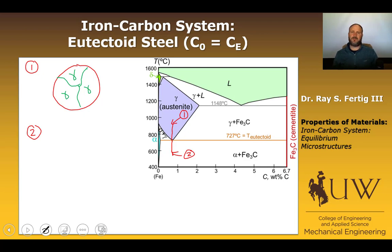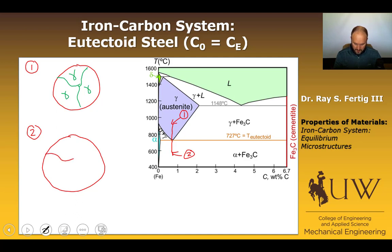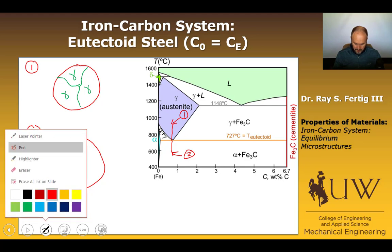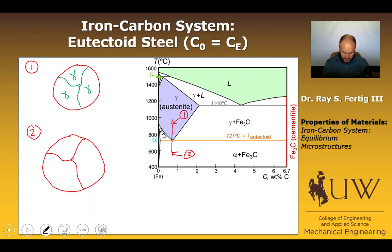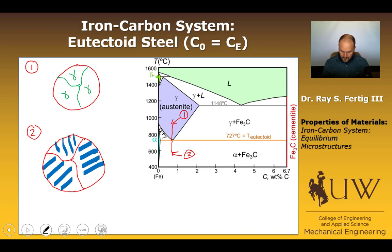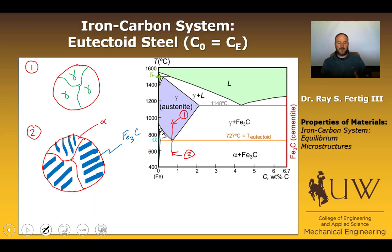Because alpha and cementite have different carbon compositions than gamma, diffusion is required — just like in the eutectic reaction. So we end up with a similar lamellar microstructure so that diffusion can occur — a lamellar microstructure of alpha and cementite. We draw cementite lamellae in blue within the original grain boundaries, resulting in Fe3C lamellae in an alpha matrix. That is our eutectoid microstructure.